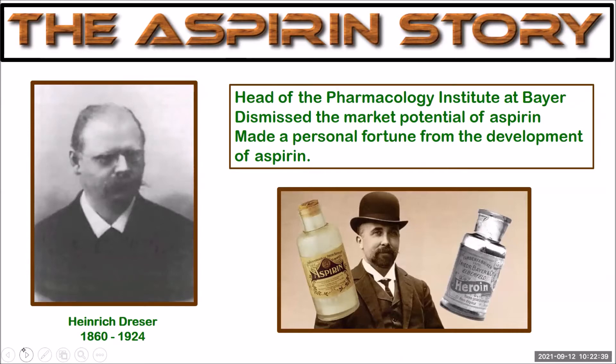Eichengren refused to accept Dresser's rejection and pressed for the development of aspirin. He tried it on himself, recruited physicians to secretly test it, and they found it was successful in treating several painful conditions. Neither Eichengren nor Hoffman were specifically credited with that synthesis, but in 1934 Albrecht Schmidt was writing a history of the Bayer company and named Hoffman as the inventor. Some papers have claimed that because Eichengren was a German Jew, the rise of the Nazi party had limited his ability to make a claim as the true inventor at that time.